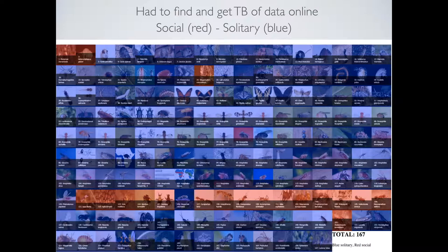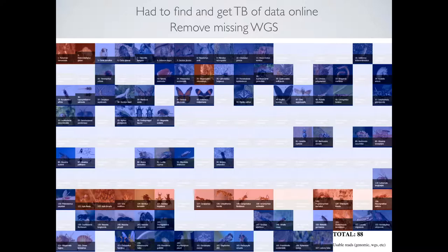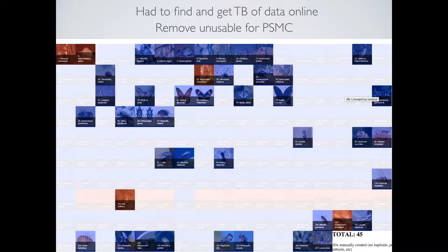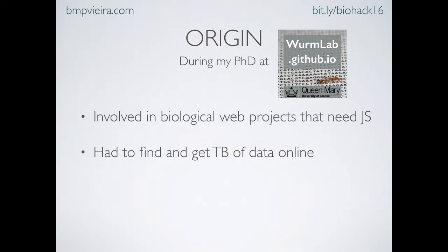By fetching all the metadata, I figured out — for several reasons — that I could only use a very small subset of these genomes, which saved me a lot of time. Otherwise I would have had to read all the papers and follow all the links in the database manually. The raw data for my PhD, compressed, is seven terabytes.